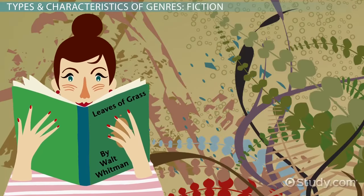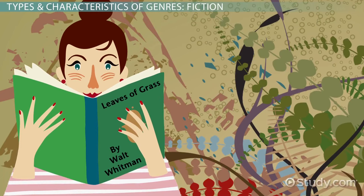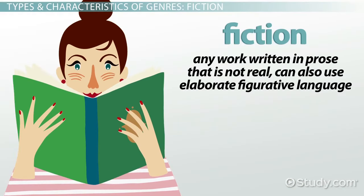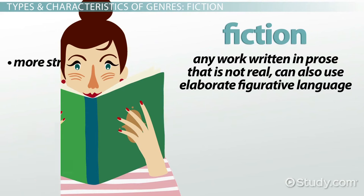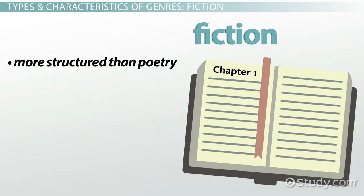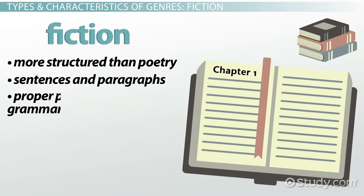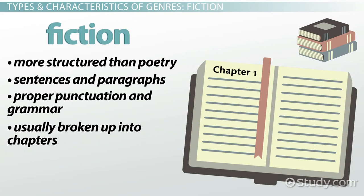Poetry, however, is not the only genre that can utilize figurative language. Similarly, fiction — which is any work written in prose that is not real — can also use elaborate figurative language. However, fiction is much more structured than poetry. It must be written in sentences and paragraphs with all the proper punctuation and grammar, which makes it prose. Usually, fiction is broken up into chapters as well.